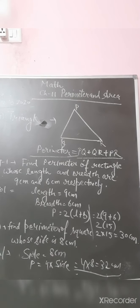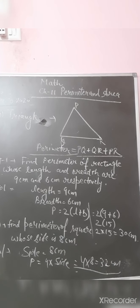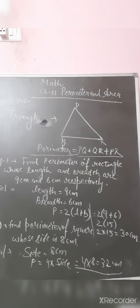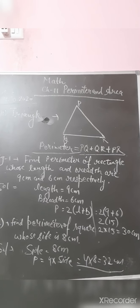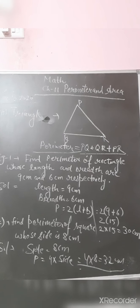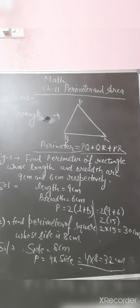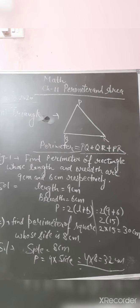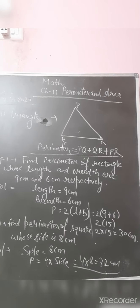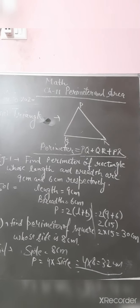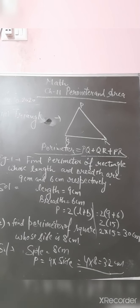Next: find the perimeter of a square whose side is 8 cm. Side = 8 cm. Perimeter = 4 × side = 4 × 8 = 32 cm. So dear students, in this way you have to solve the sums to calculate the perimeter of a triangle, perimeter of a rectangle, and perimeter of a square.